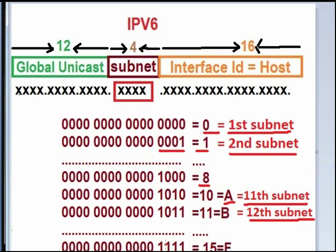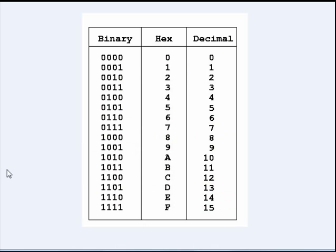In the same way, 1011 equals 11 in decimal, which in hexadecimal is B. So F — which is 15 — means the 16th subnet. And this is the binary to hexadecimal conversion: from 10 to 15 in decimal, we use A, B, C, D, E, F. In IPv6 we have to write in hexadecimal form.